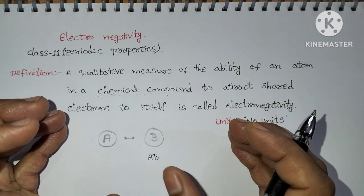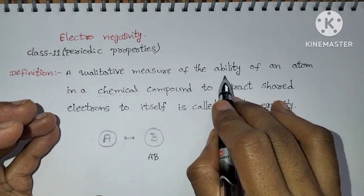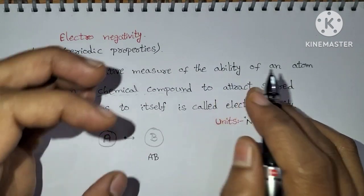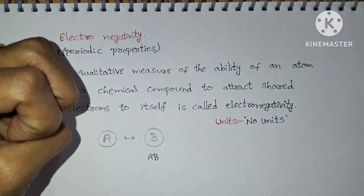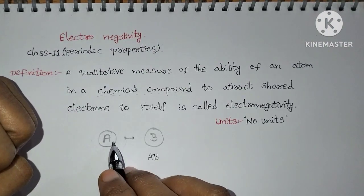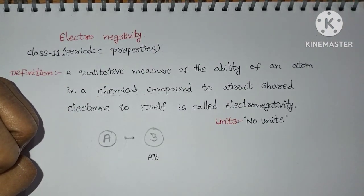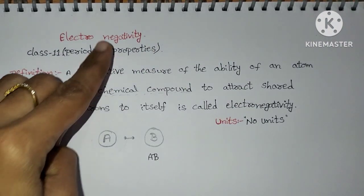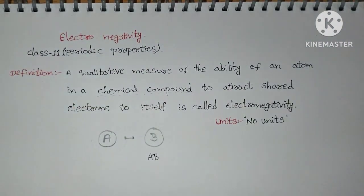So finally, electronegativity is the ability of an atom to attract the shared pair of electrons to itself.